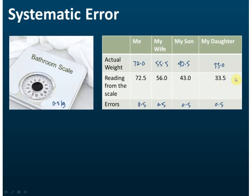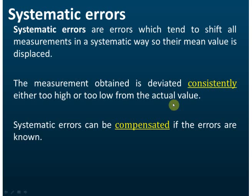All the measurements are shifted 0.5 kg from the actual value, so the mean value is displaced. From this we can see that the error is consistent. For systematic errors, the error should be consistent every time — in this case, it is always 0.5 kg.